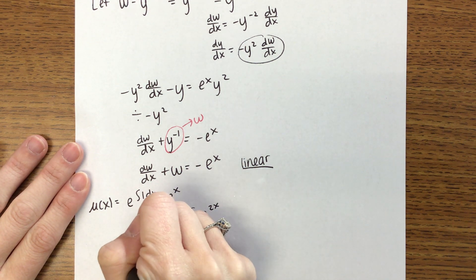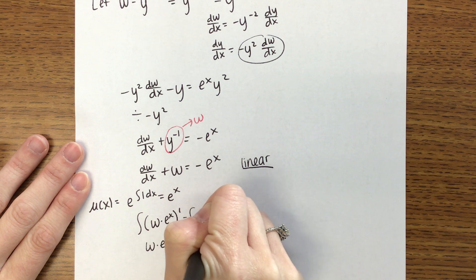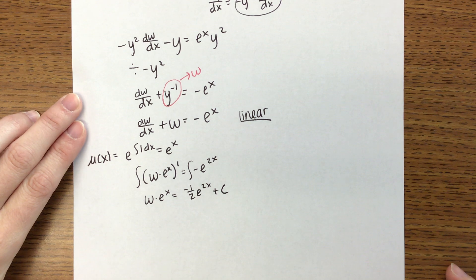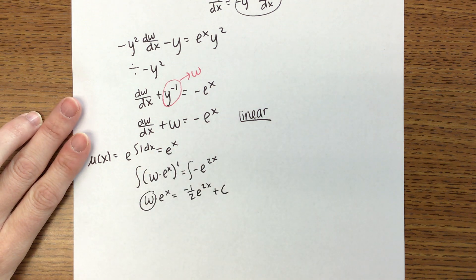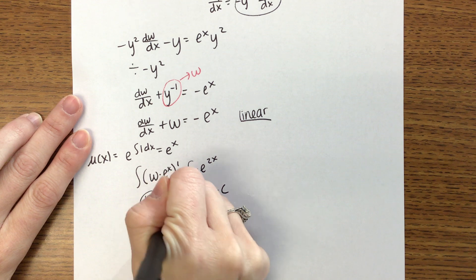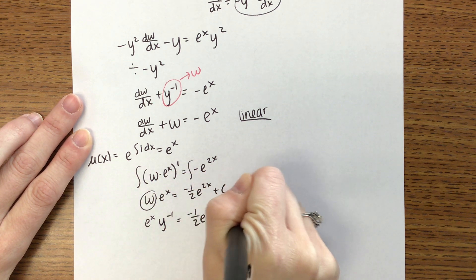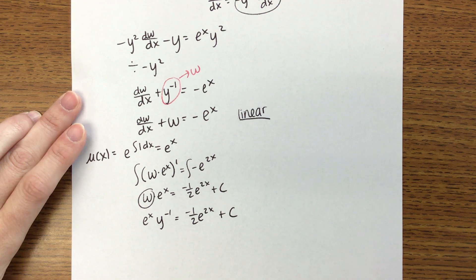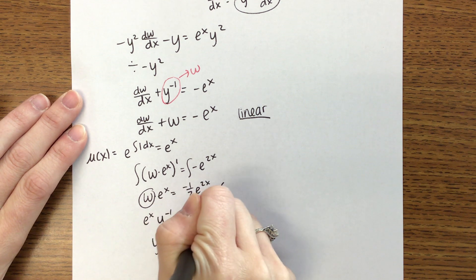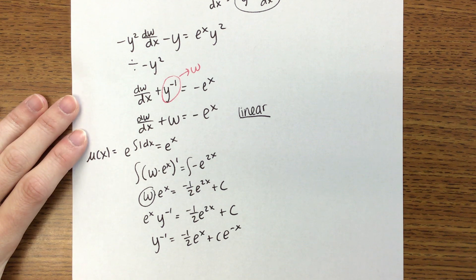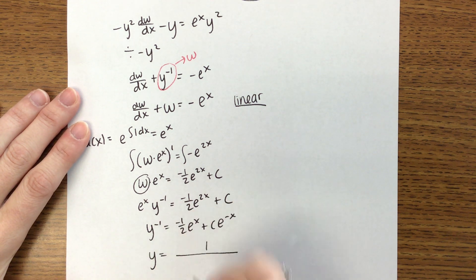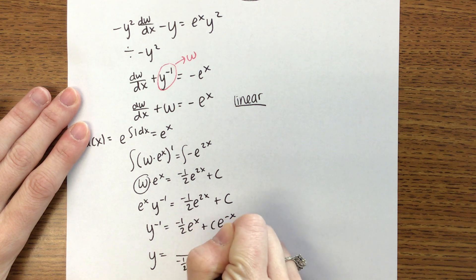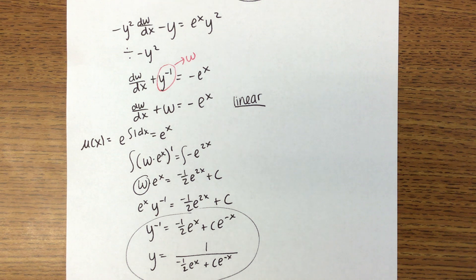Once we multiply the entire equation by e to the x, on the left side we will have the derivative of w times e to the x. On the right side we have negative e to the 2x. Integrating, we end up with w times e to the x equals negative one-half e to the 2x plus c. Substituting back w equals y to the negative one gives us e to the x times y to the negative one equals negative one-half e to the 2x plus c. Dividing out e to the x, y to the negative one equals negative one-half e to the x plus c times e to the negative x. You may leave the answer like that, or express y as 1 over (negative one-half e to the x plus c e to the negative x) — either one will work.